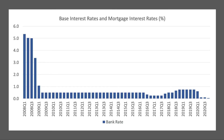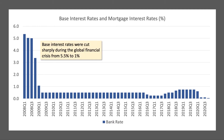Here's a chart showing the base rate of interest for the UK since 2008. If we go back to the global financial crisis, interest rates were hovering around 5-6% at the start of the crisis, but the base rate was cut very sharply during the GFC from 5.5% to 1% within the space of a few weeks or a few months.